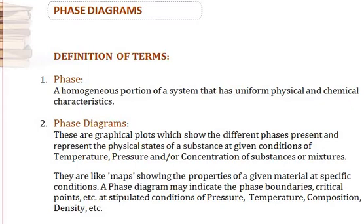These conditions could be temperature, pressure, and/or concentration of substances or mixtures. Sometimes you have a phase diagram with dimensions of temperature and pressure — pressure on the y-axis and temperature on the x-axis — or you have temperature and concentration. When you have just temperature and concentration, you assume that pressure is kept constant, which is why it's excluded from the system.